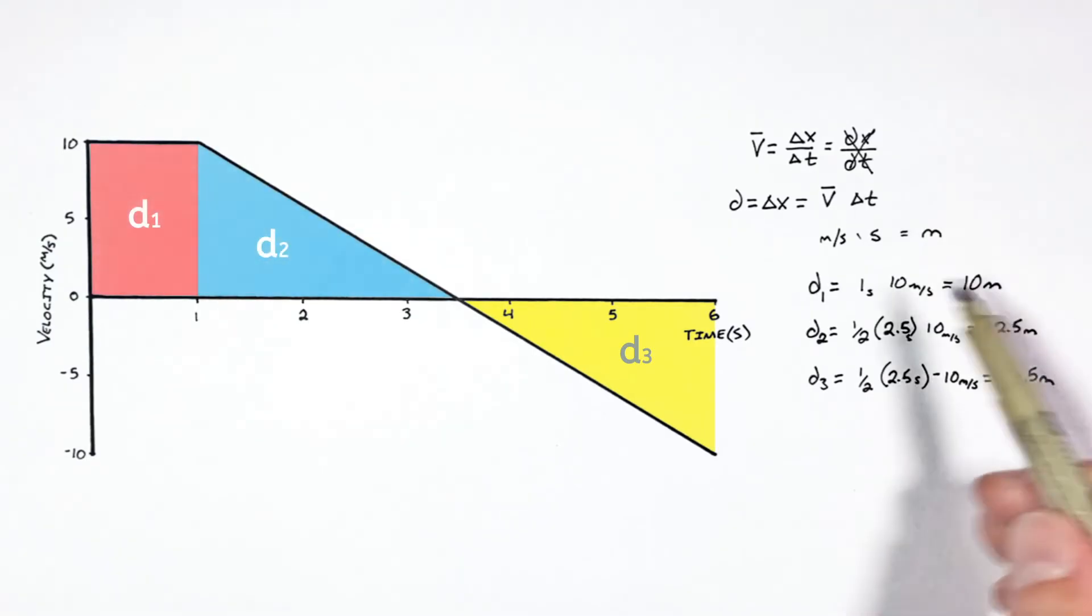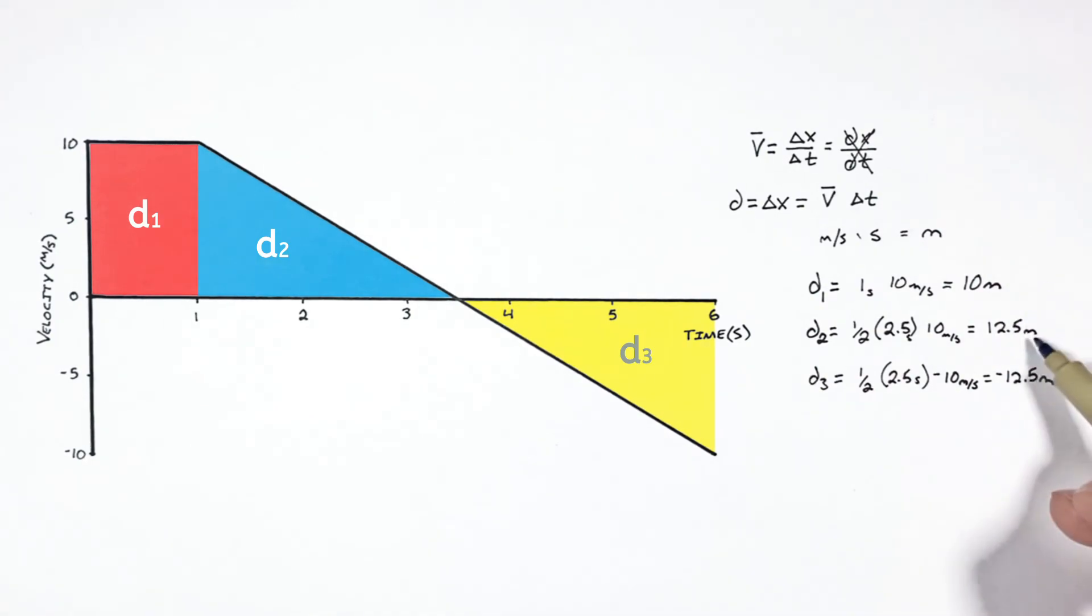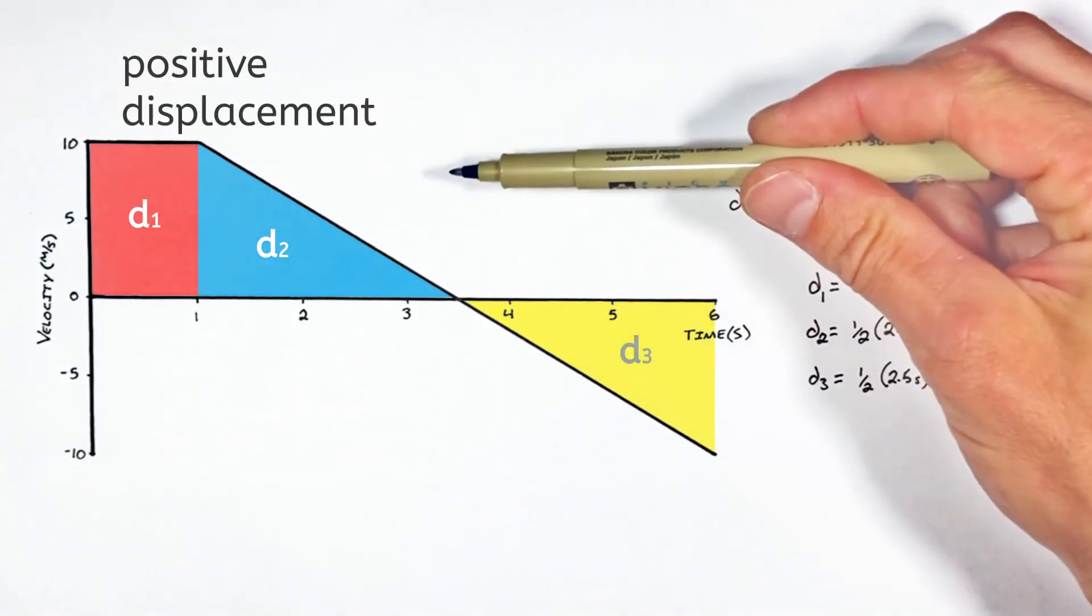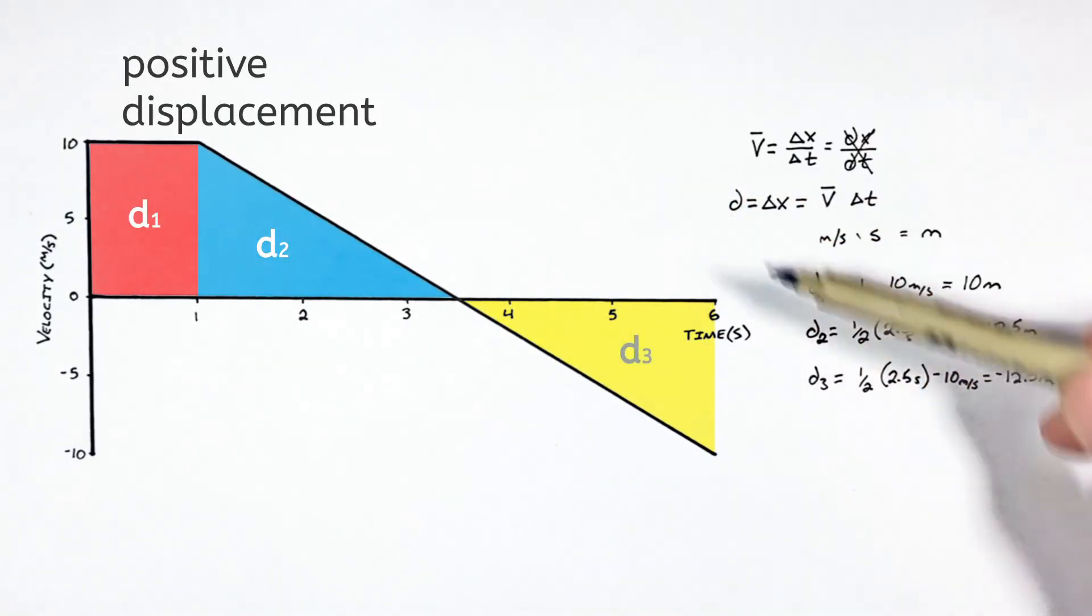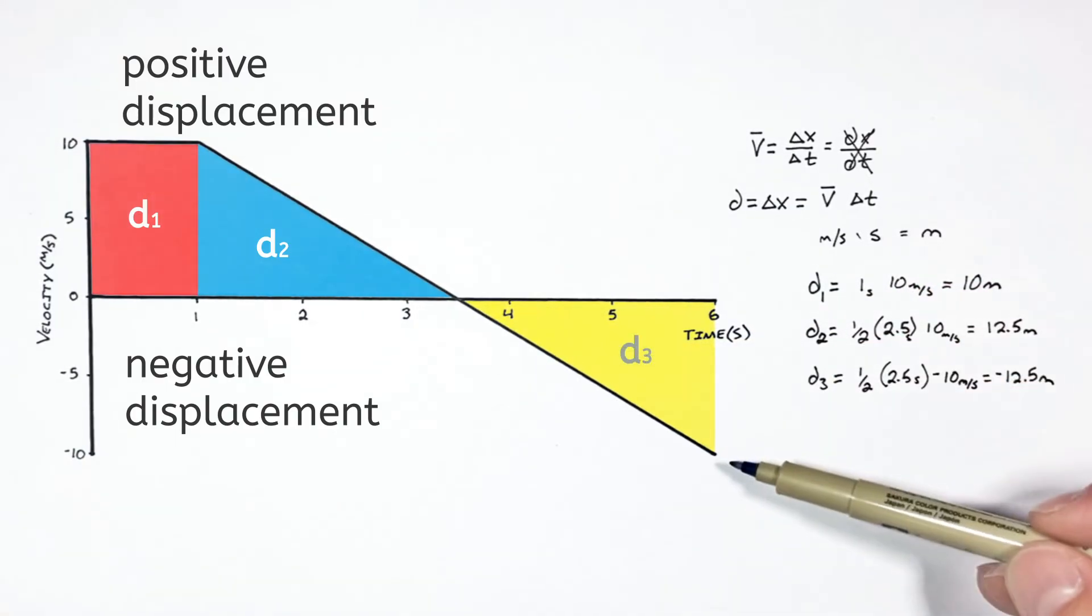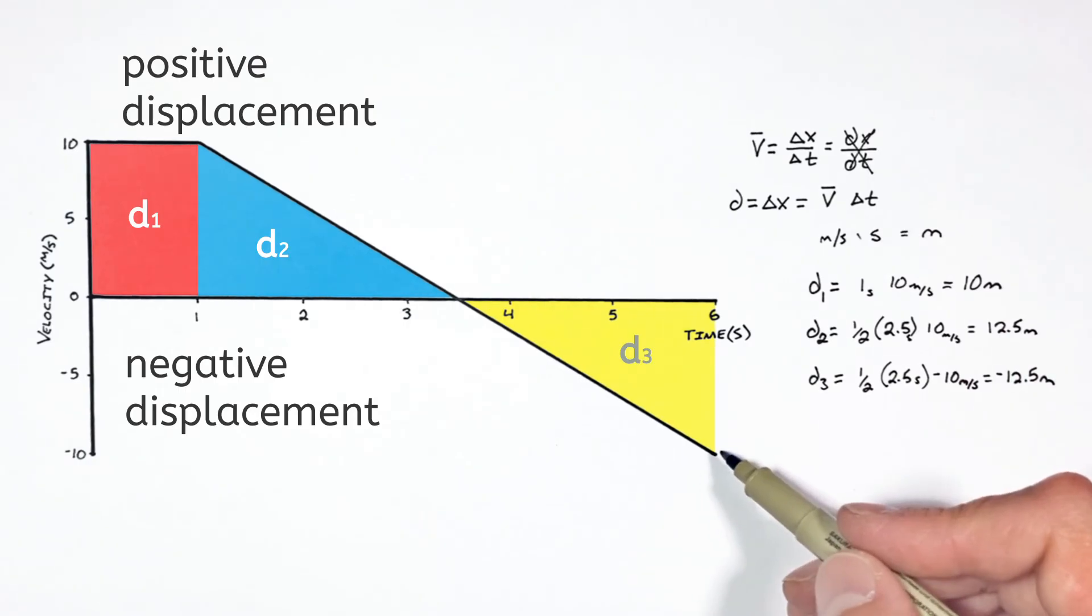You see, any time an object is moving forward, the velocity is going to be positive, and that yields a positive displacement over that period of time. We see that graphically as an area above the x-axis. Any time an object is moving backwards, like over here, the area that is traced out by the graph is underneath the x-axis, or really we would say it's a negative displacement, because it's beneath the x-axis. So we call it a negative area.